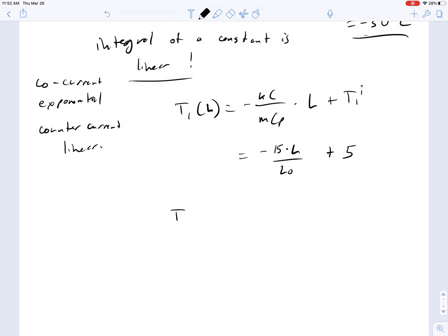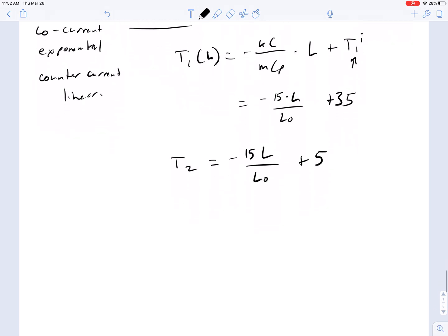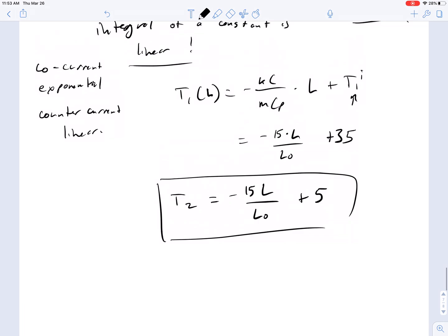And so then, now solving for T2, we see that this is plus 35. T1 initial is 35. T2 is equal to minus 15 times L over L0 plus 35. Super easy, linear distributions for temperature inside of this heat exchanger.